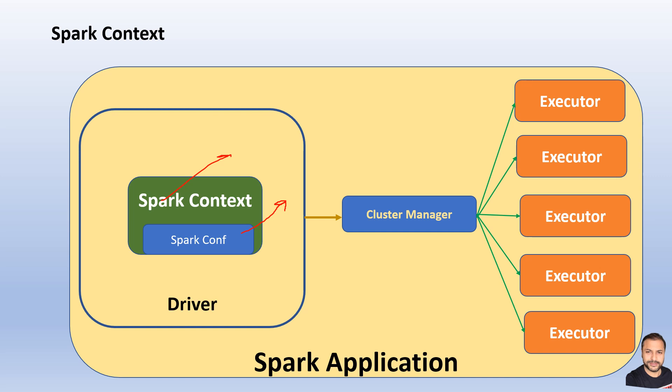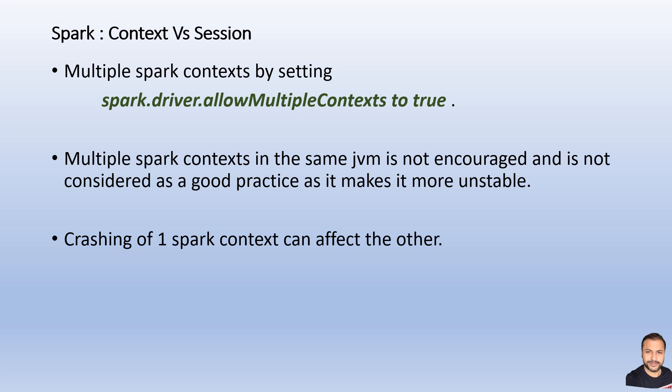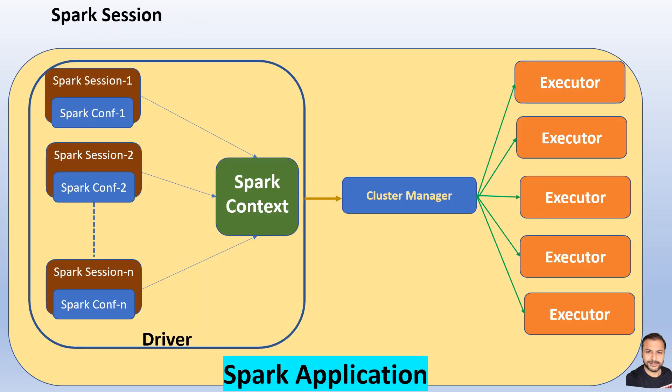The only way to have independent configurations for different users in the old model was to create multiple Spark context objects — Spark context 1, 2, and 3. But this is not recommended because it makes the entire cluster unstable, and crashing of one Spark context would affect the others. It was technically possible in earlier versions by setting a specific property to true, but it could cause ripple effects across contexts, making the application run unstable.